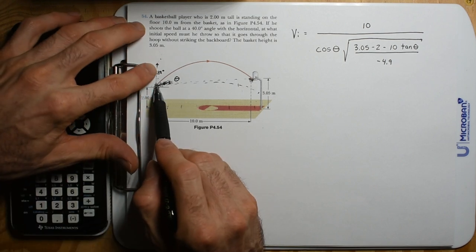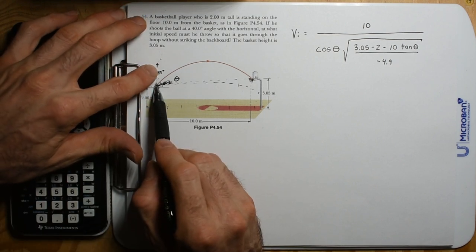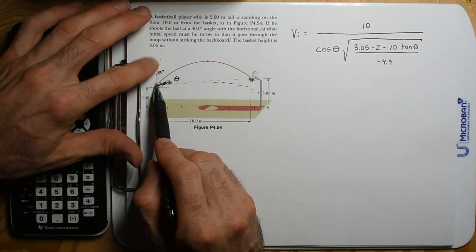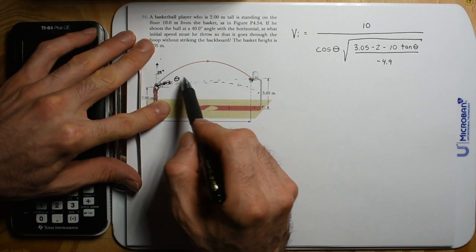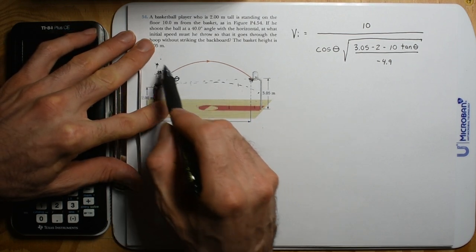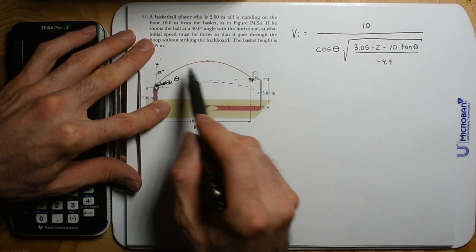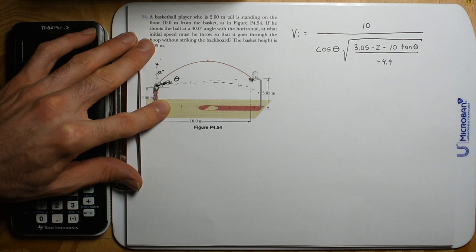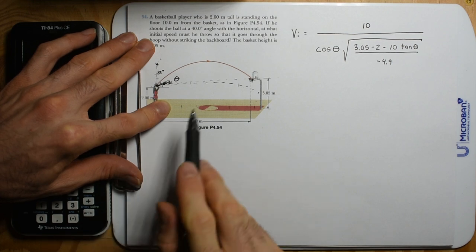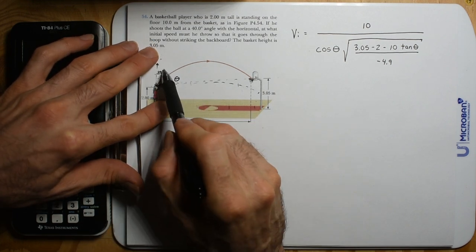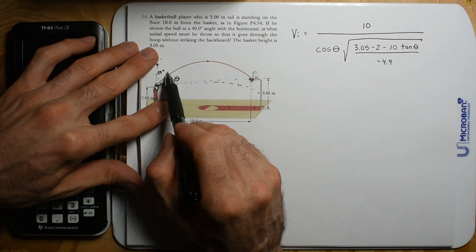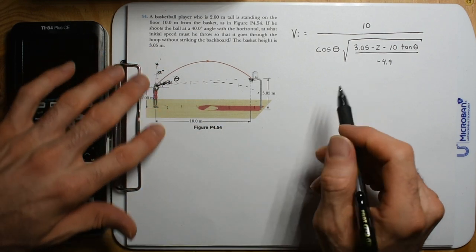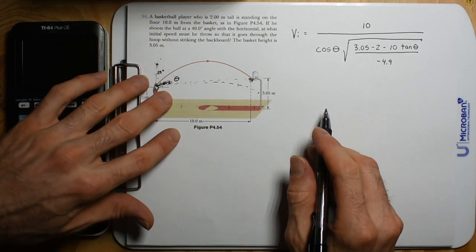We've shown we need a ton of velocity at theta equals zero and at theta equals 89. There's going to be an ideal angle somewhere in between. That's where we use derivatives.